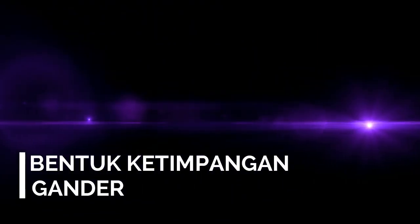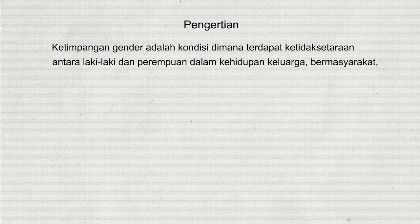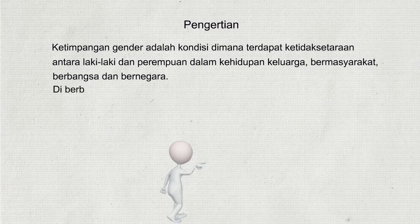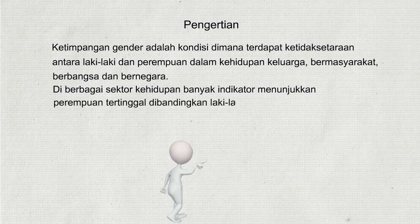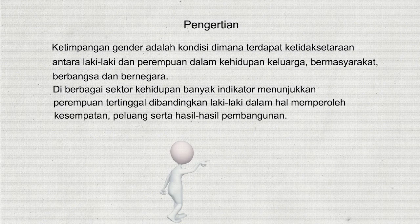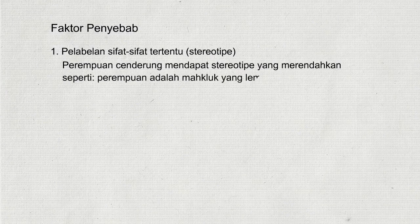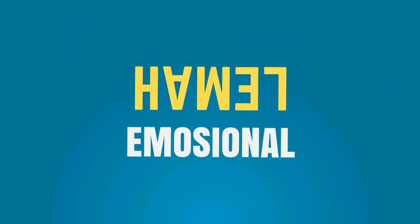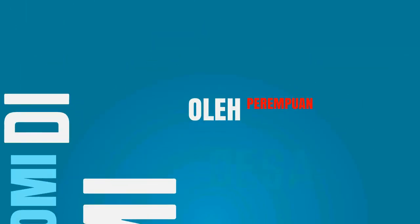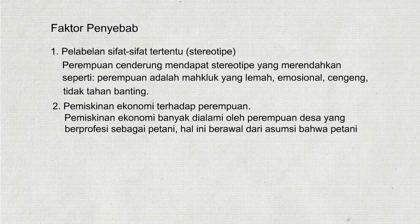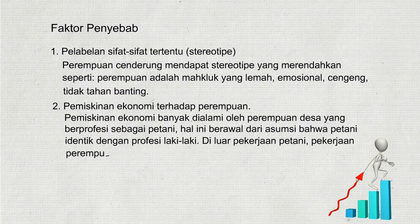Bentuk ketimpangan gender. Ketimpangan gender adalah kondisi di mana terdapat ketidaksetaraan antara laki-laki dan perempuan dalam kehidupan keluarga, bermasyarakat, berbangsa, dan bernegara. Di berbagai sektor kehidupan banyak indikator menunjukkan perempuan tertinggal dibandingkan laki-laki dalam hal memperoleh kesempatan, peluang, serta hasil-hasil pembangunan. Faktor penyebab antara lain pelabelan sifat-sifat tertentu, serta pemiskinan ekonomi terhadap perempuan, banyak dialami oleh perempuan desa yang berprofesi sebagai petani karena asumsi bahwa petani identik dengan profesi laki-laki.